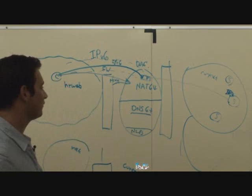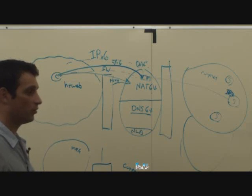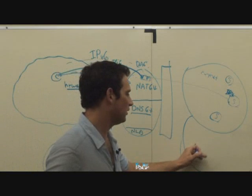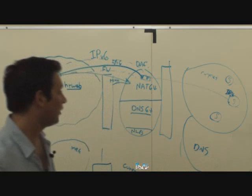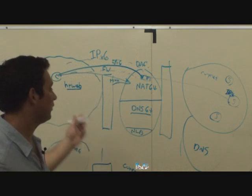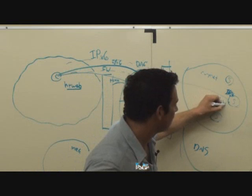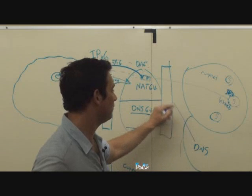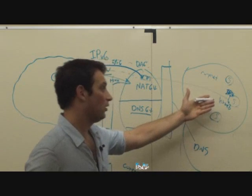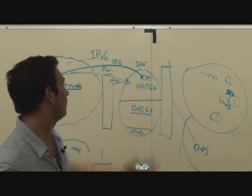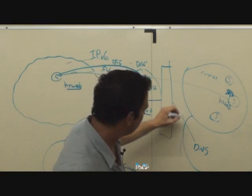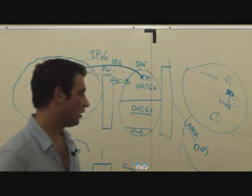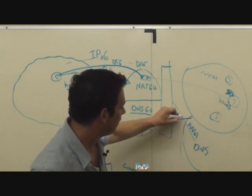So the client, in a regular DA scenario generally, would send a request to the corporate DNS server and would ask for the IP address of HR web. It would send a request and would get back an IPv6 address, because in regular scenarios we hope that the client would connect with IPv6. But in our case, instead of getting a quad-A response — which is the response you get for IPv6 addresses — you'll just get an A response.